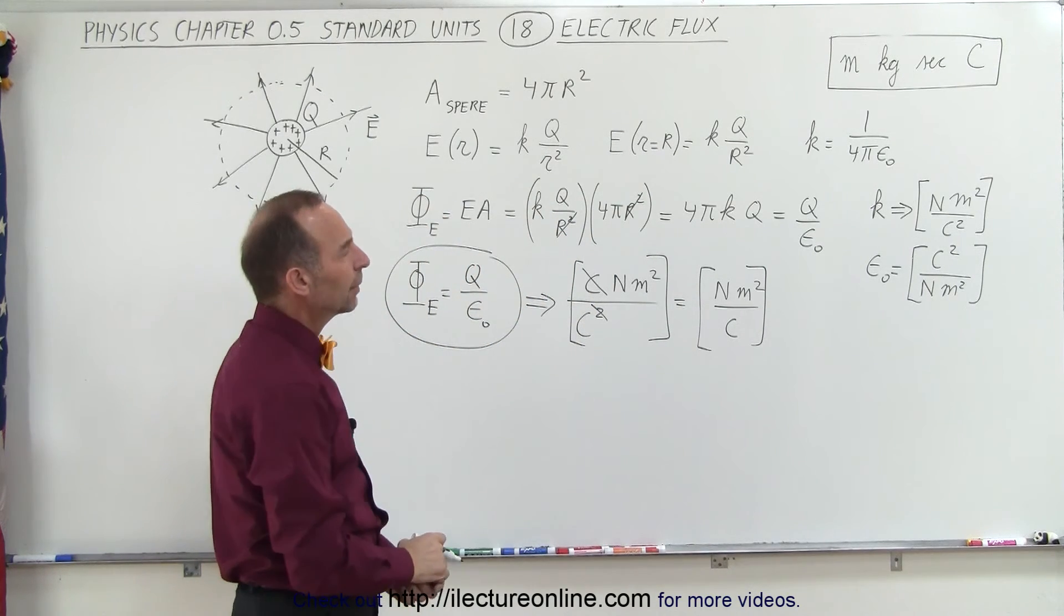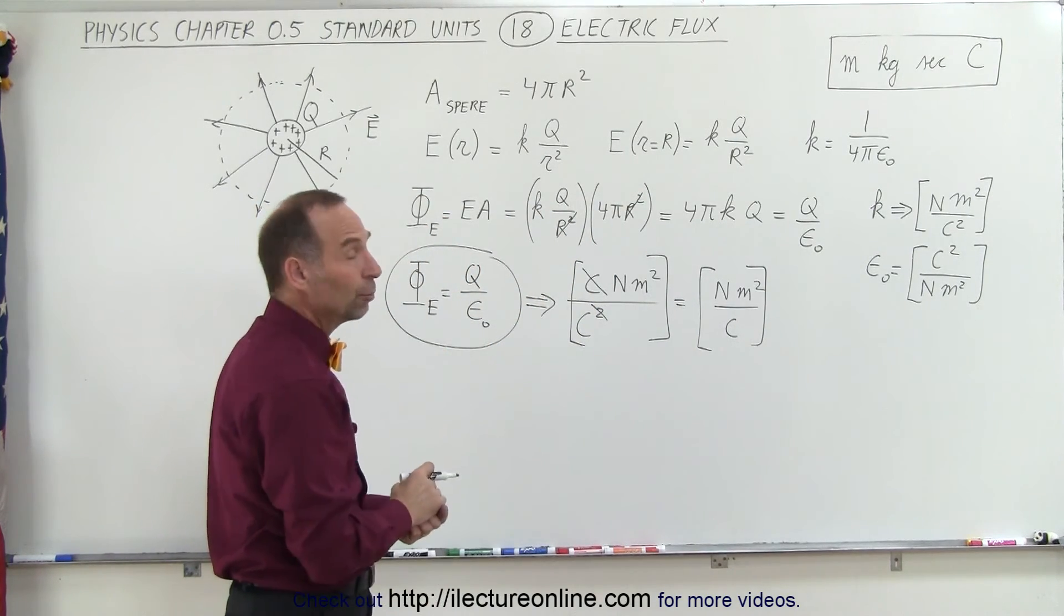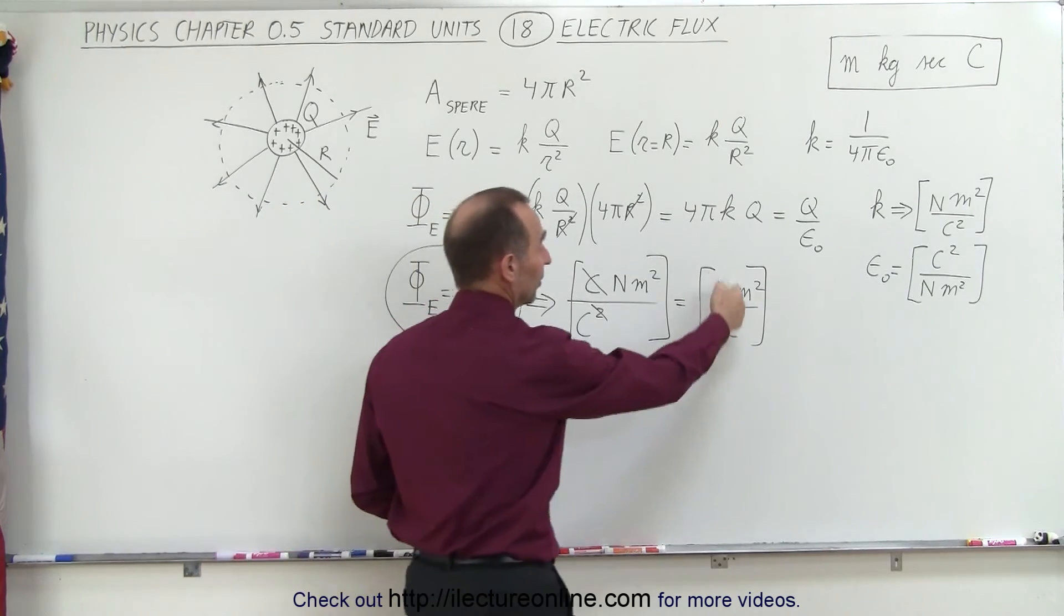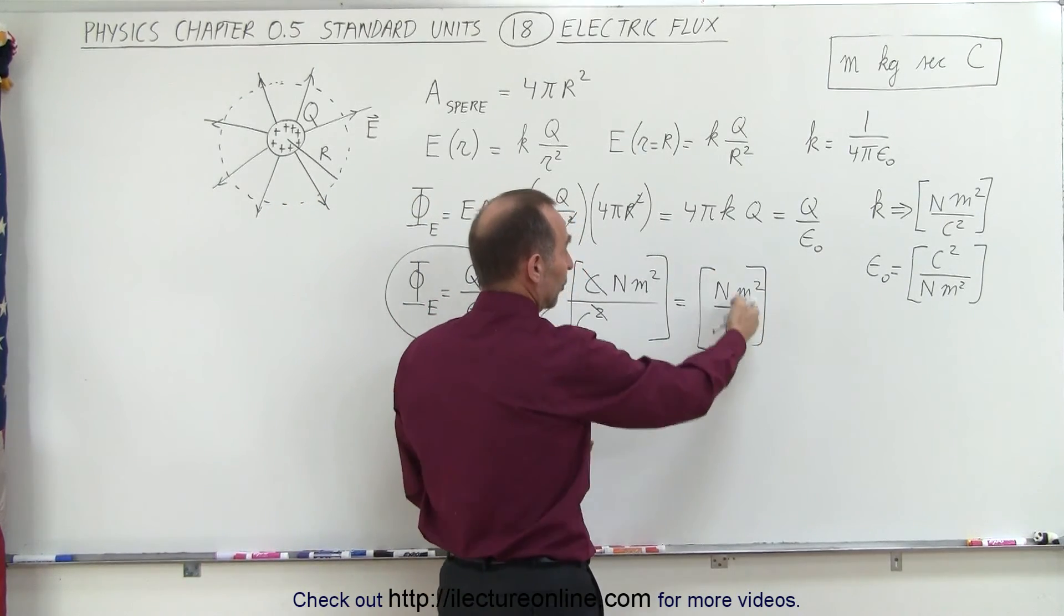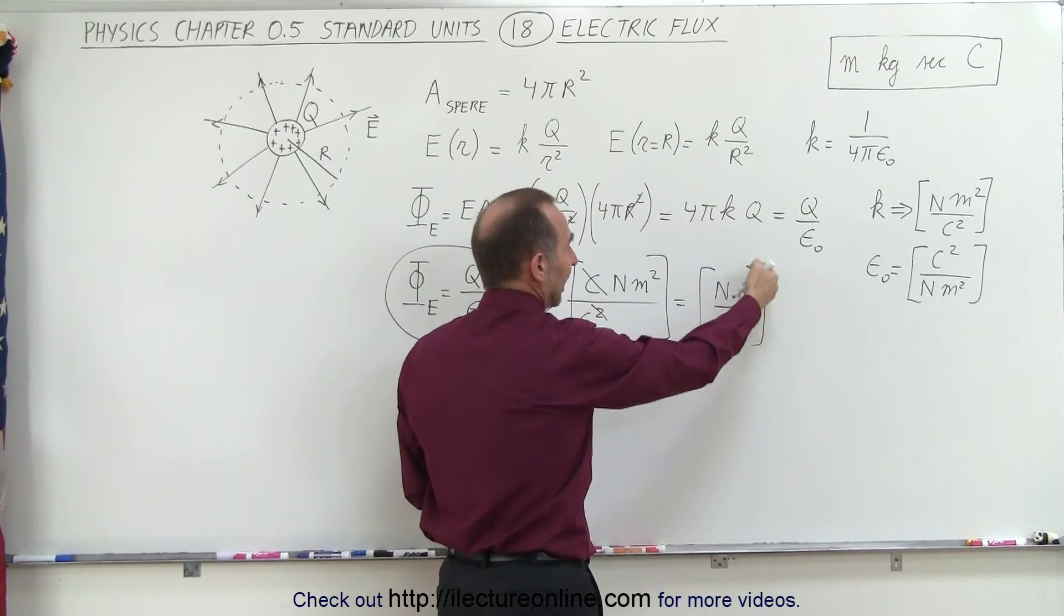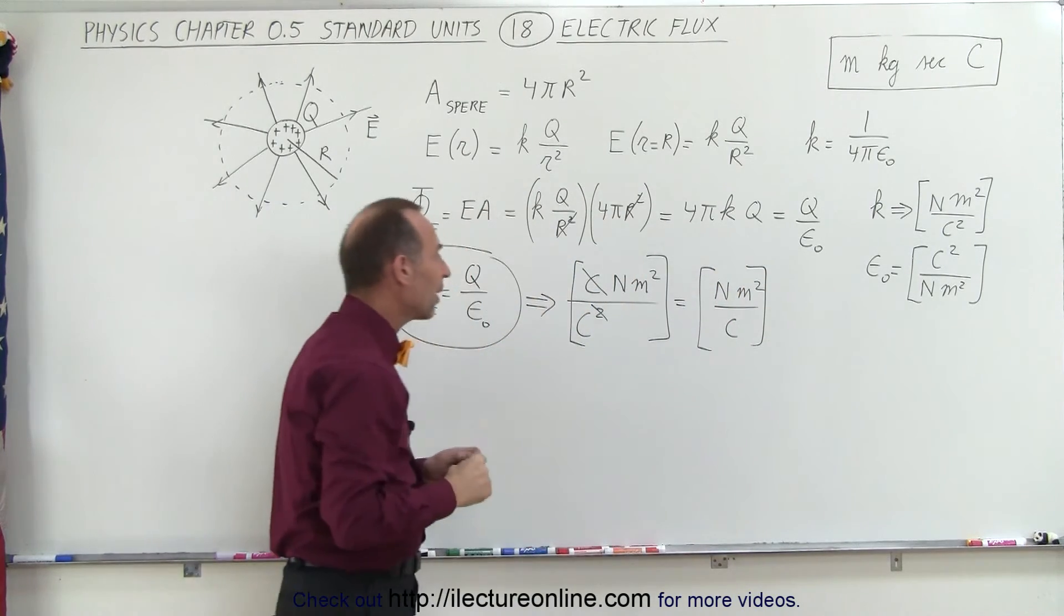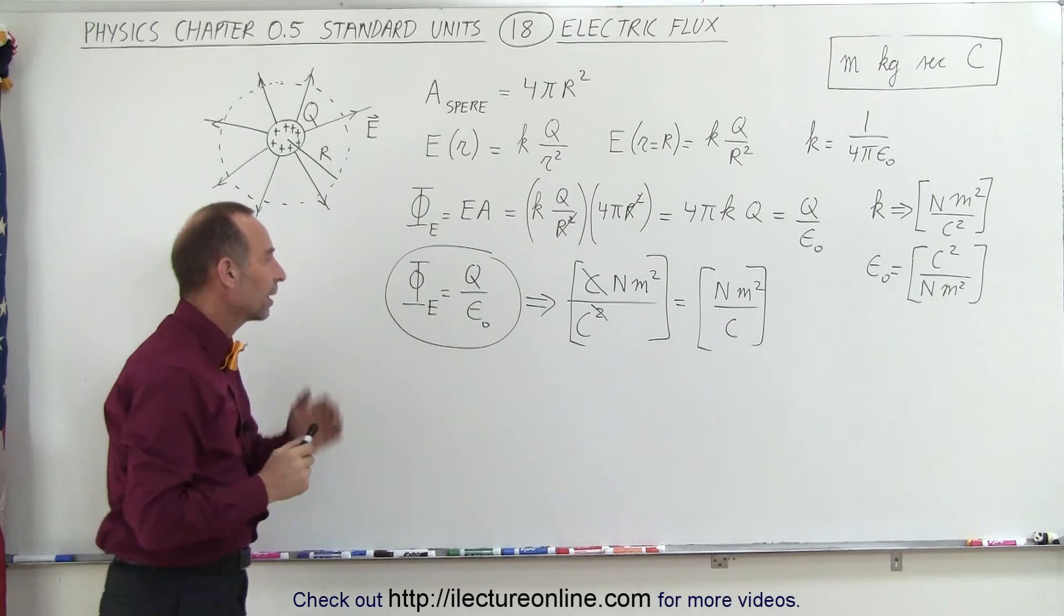Now, think about it this way. Newtons per coulomb, that was the unit for electric field, and meters squared is area, so therefore, electric field times area, those seem to be the proper units for the electric flux.